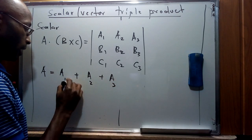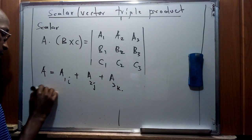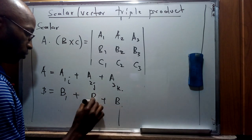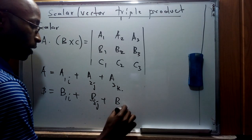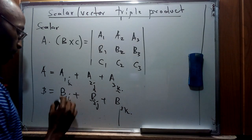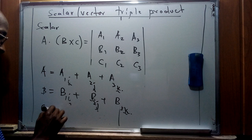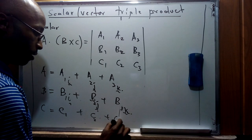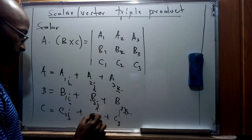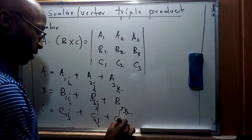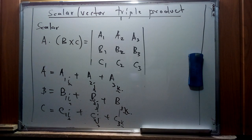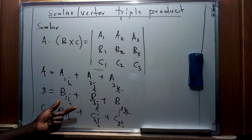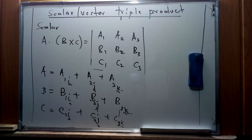For vector a, the components a1, a2, a3 represent directions in the i, j, and k directions. Similarly for b, it is b1, b2, b3 in the i, j, and k directions. And c represents c1, c2, c3 — those components represent the direction of that specific element of the vector. This is how we represent the scalar triple product using the various components for a, b, and c.